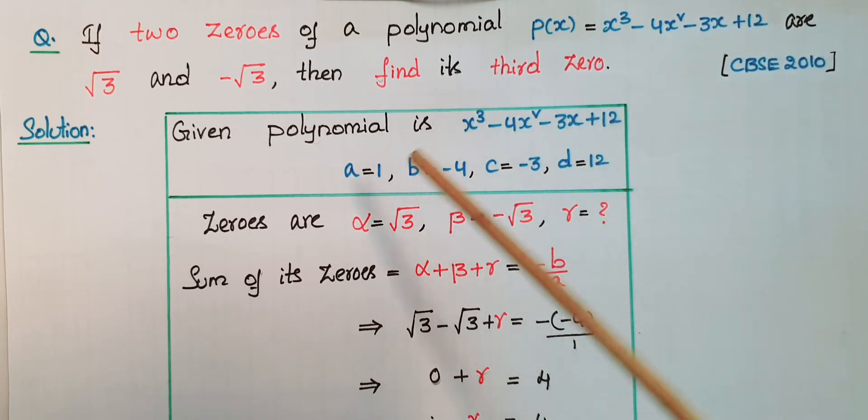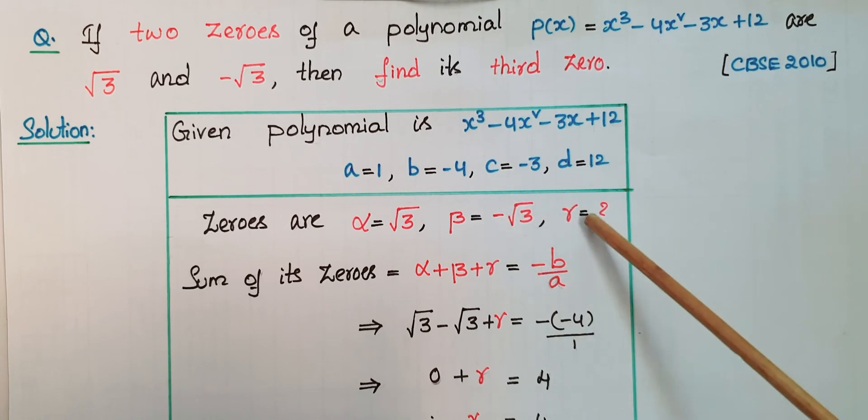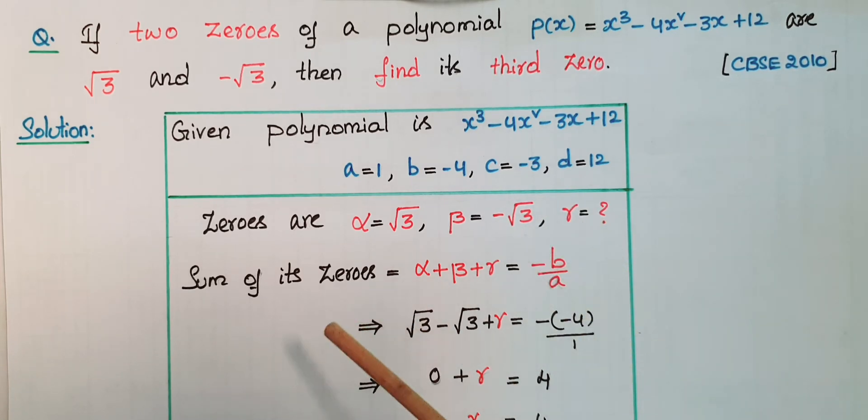The two given zeros are α = √3 and β = -√3, and we have to find γ. We know that the sum of zeros equals α + β + γ = -b/a.